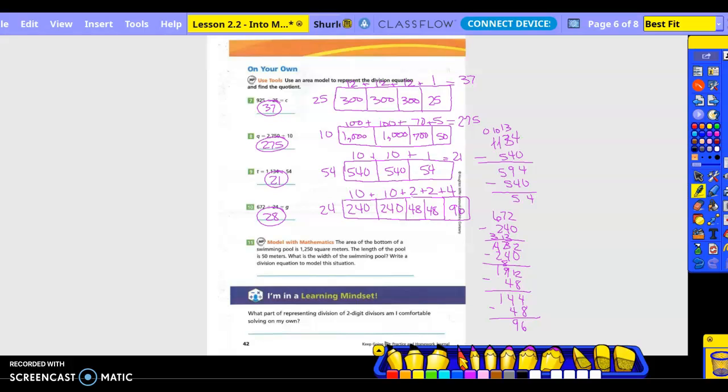Number 11. The area at the bottom of the swimming pool is 1,250 square meters. The length of the pool is 50 meters. What is the width of the swimming pool? So this is what we're looking for.